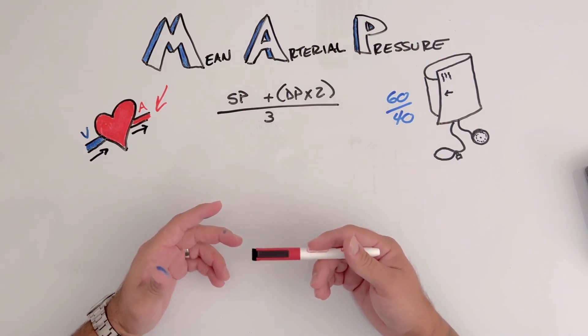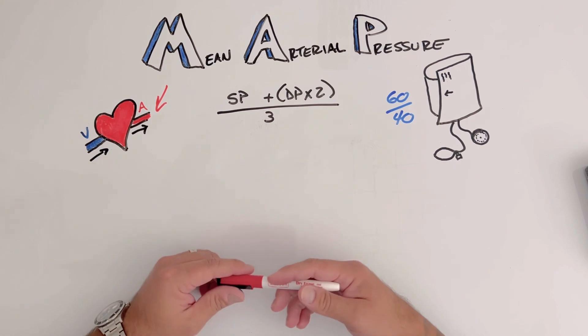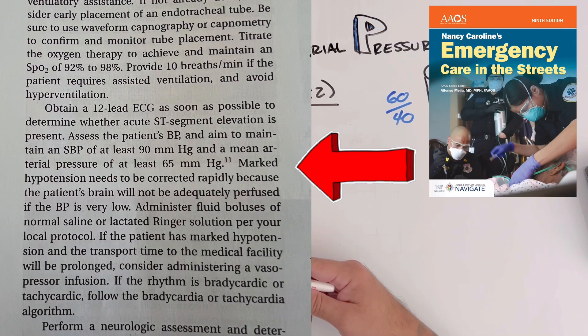It is important that we have an adequate MAP so we are perfusing our brain. Nancy Caroline suggests that post-cardiac arrest care, we're aiming for at least a MAP of 65.